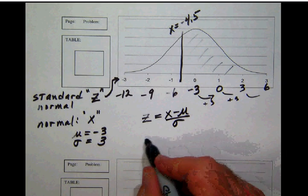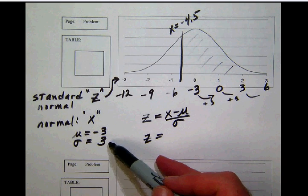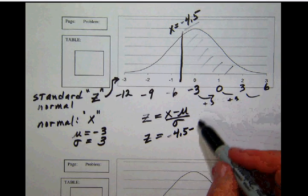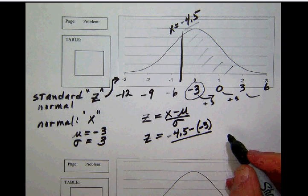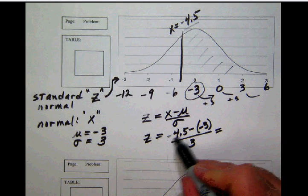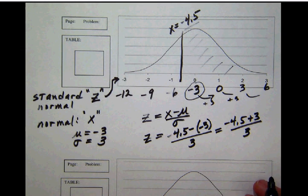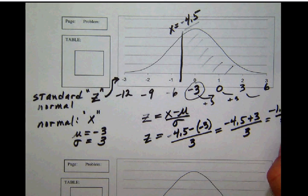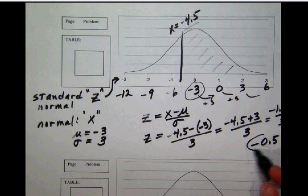These normal distribution scores are called x-scores, but this particular x-score is -4.5. We subtract the mean μ, which is -3, then divide by σ, which is 3. So that's -4.5 - (-3) divided by 3, which is -4.5 + 3 divided by 3. -4.5 + 3 = -1.5, and -1.5 / 3 = -0.5.